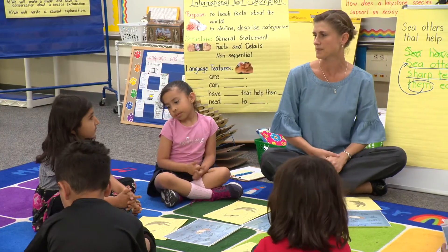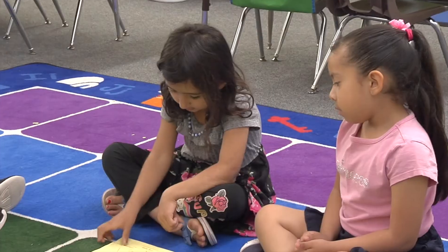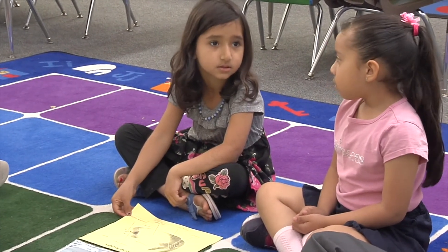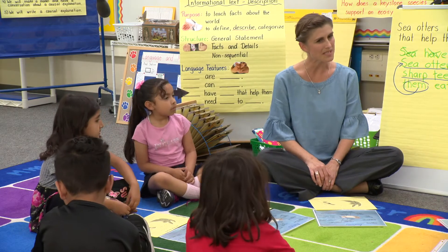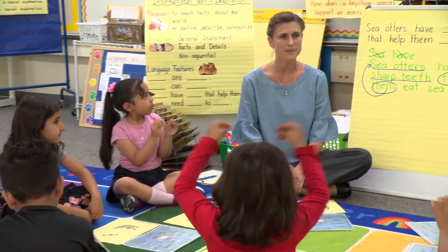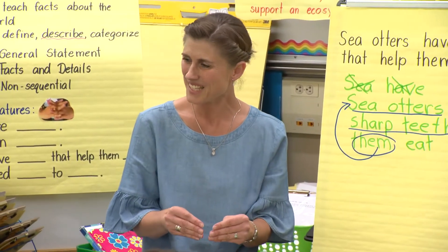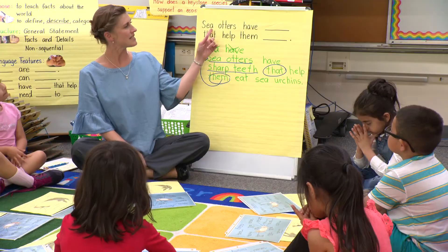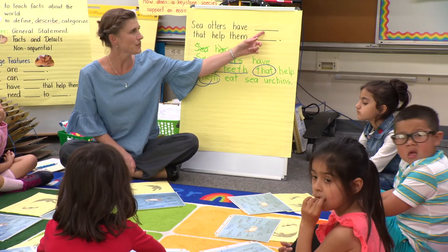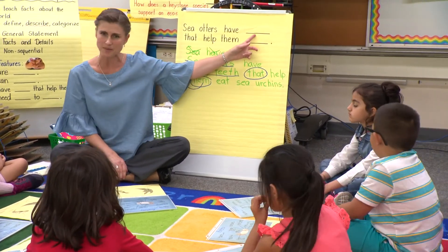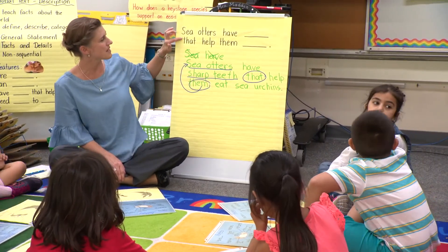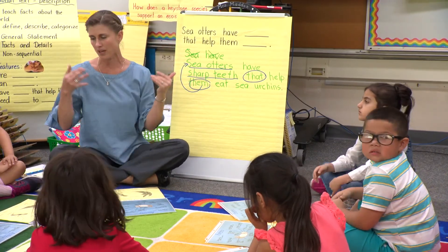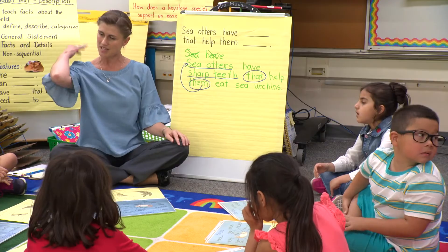The teacher asks what sea otters have, and students continue contributing sentences about anatomy. The teacher summarizes: boys and girls, you were using 'sea otters have' and telling me the piece of the anatomy, and then you used that chunk to tell about the purpose of that part of their anatomy. Pat yourself on the back.